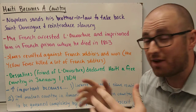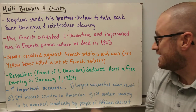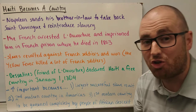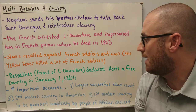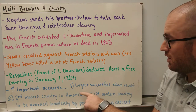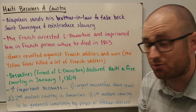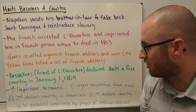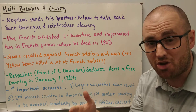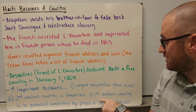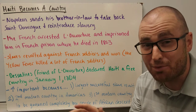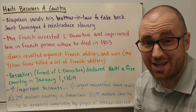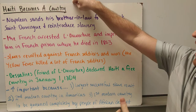Dessalines, a friend of Louverture who had fought alongside him in many battles, declared Haiti a free country on January 1st, 1804, after the slaves defeated the French soldiers. This was important for three reasons: it was the largest successful slave revolt ever; it was the second modern country in the Americas; and it was the first modern country to be governed completely by people of African descent, as many of the former slaves had been born in Haiti and were now able to take control of their own country.